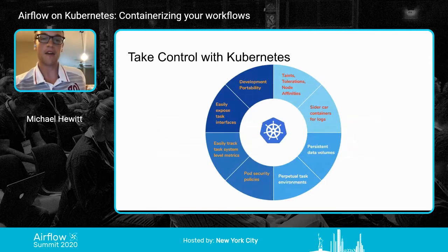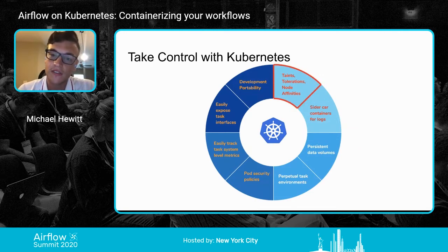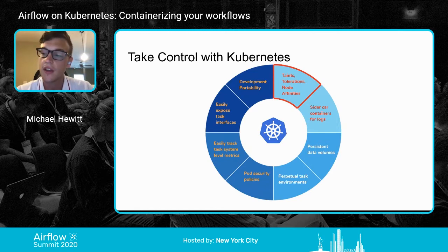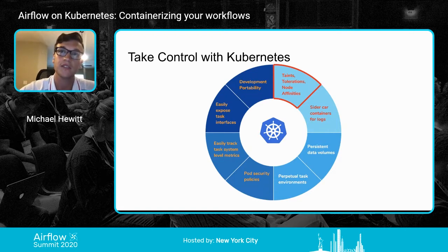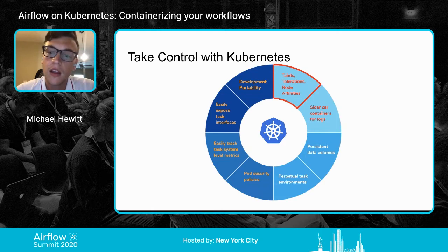Now that we have control with Kubernetes via the Kubernetes pod operator, we have the power of Kubernetes at our hands. We can add taints, tolerations, and node affinities — these enable you to make dedicated nodes on your Kubernetes cluster for dedicated tasks or pods. For example, if you want to run Spark and need a more powerful node, you can use taints, tolerations, and node affinities to make that work. I'll go over this further because it's an important concept, especially in a big data processing pipeline tool.